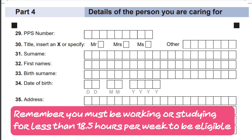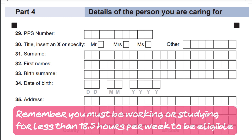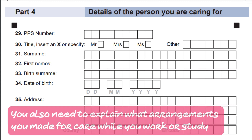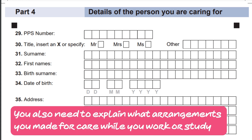Remember, you must be working or studying for less than 18 and a half hours per week to be eligible. You also need to explain what arrangements you made for care while you work or study.